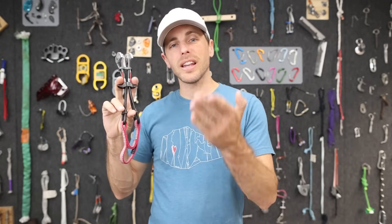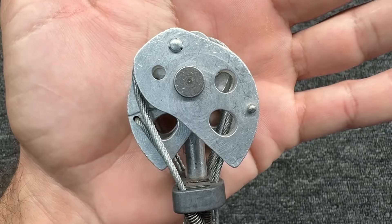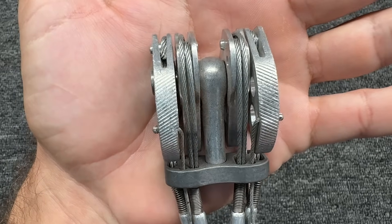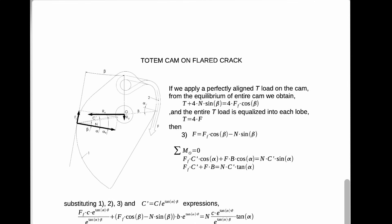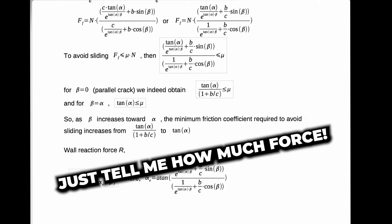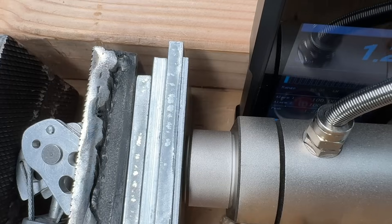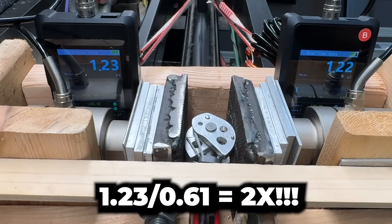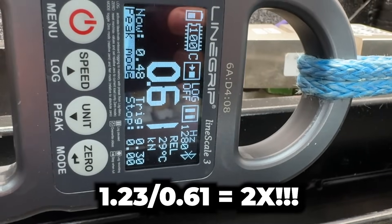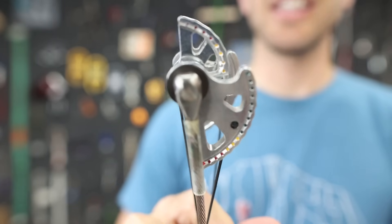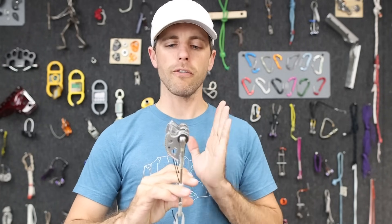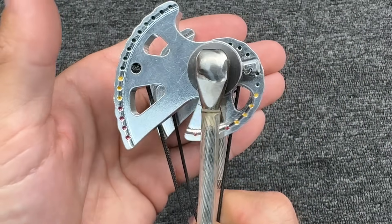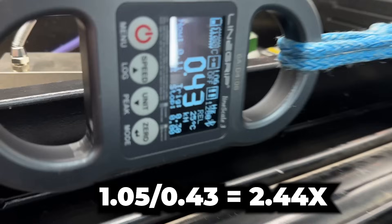Speaking of things that surprisingly hold well — the Totem. What makes it interesting is that it has a logarithmic spiral on the back of the lobe because the cable comes out the back pulling on it. Totem does have the complicated math on their website but no concrete number for the outward force — so we just pulled on it. It's pushing evenly on both sides, and the outward force was 1.2 kN after pulling 0.61 kN. My favorite for show-and-tell is this big-lobe cam — I'm curious if we get similar forces even though the lobe sizes are very different and the stem is way off to the side.